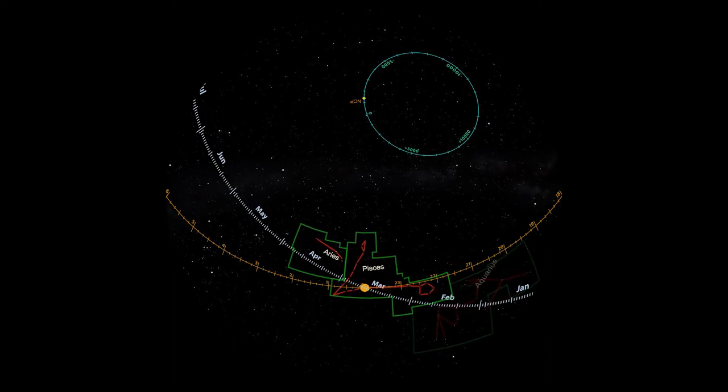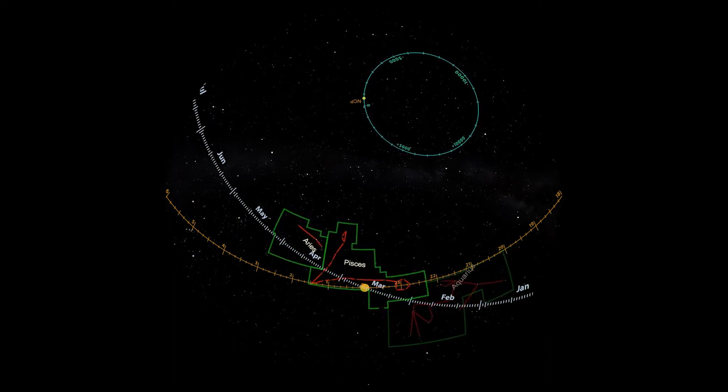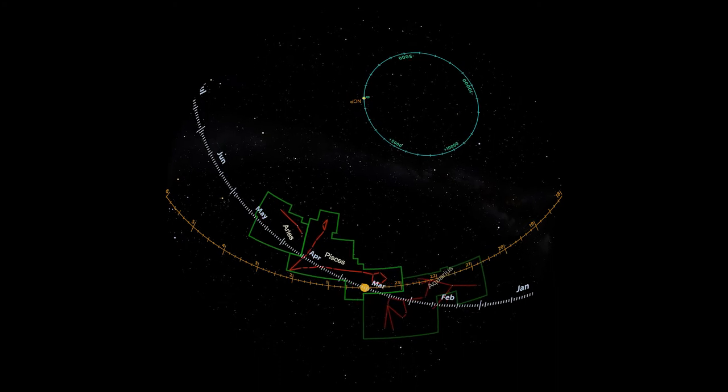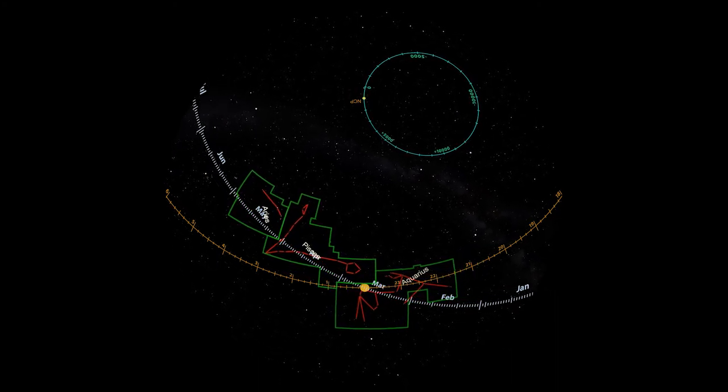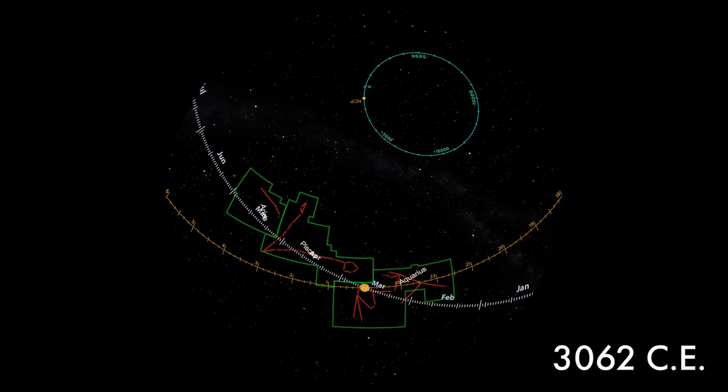In time, the first point of Aries will continue traveling until it leaves Pisces and enters the constellation Aquarius, thus beginning the age of Aquarius, when the Sun's appearance in Aquarius will mark the beginning of Northern Spring. Calling this crossing point the first point of Aries is a relic of an earlier generation of astronomers. It is a sort of time capsule that helps us realize the effect of very slight motions over immense spans of time.